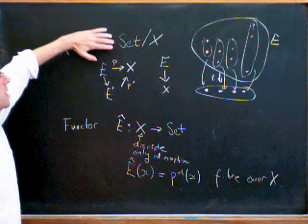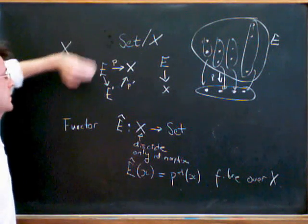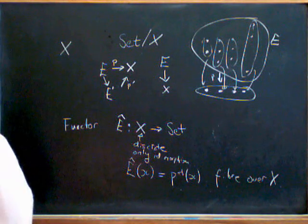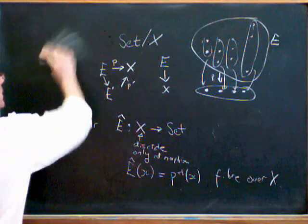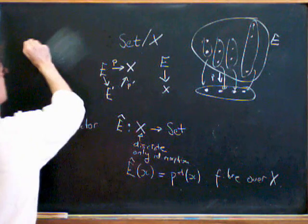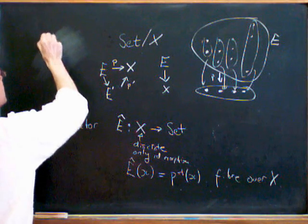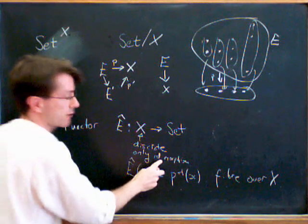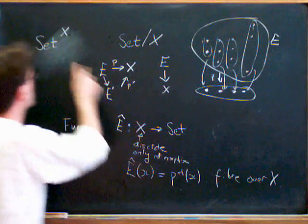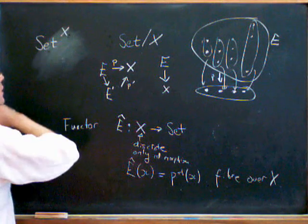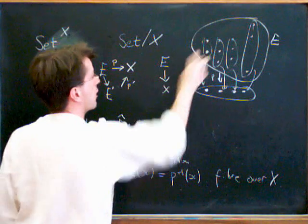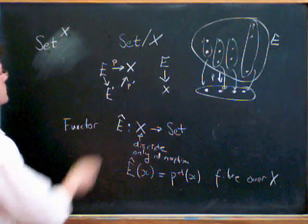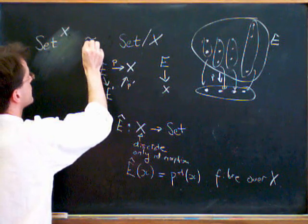Right, so this category which I've defined here, set over X, I can alternatively think of this as the functor category from X, thought of as a discrete category with only identity morphisms, into the category of sets. So by thinking of sending each element to its fibre. OK, so what we actually get here is an equivalence of categories.